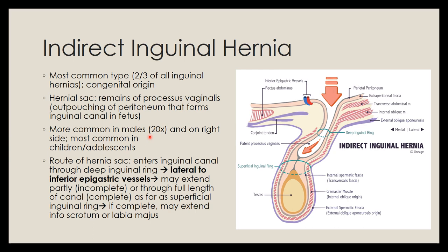Indirect inguinal hernias are around 20 times more common in males and more common in children and adolescents. The hernia sac enters the inguinal canal through the deep inguinal ring, lateral to the inferior epigastric vessels. It is very important to remember: indirect inguinal hernias always pass lateral to these vessels, whereas direct inguinal hernias pass medial to them. The sac may extend partly or completely through the inguinal canal, exiting through the superficial inguinal ring into the scrotum in males or the labia majora in females.